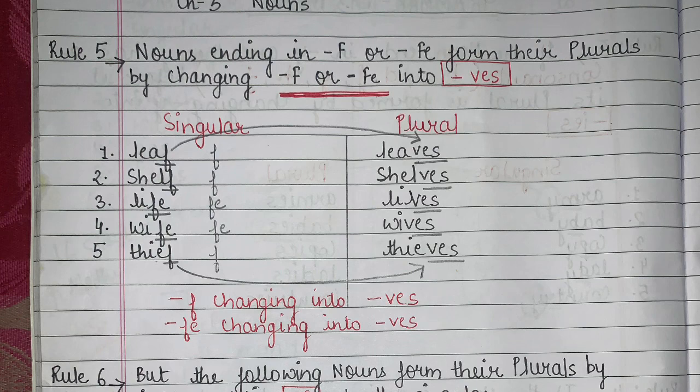Now let's see rule number 5. Rule number 5 says: nouns ending in F or FE form their plural by changing F or FE into VES. So here we have to note this important point — whenever we have F towards the last, when the last letter of the singular is F, it will change into plural by adding VES. So how will we be changing this? Let's see with certain examples.